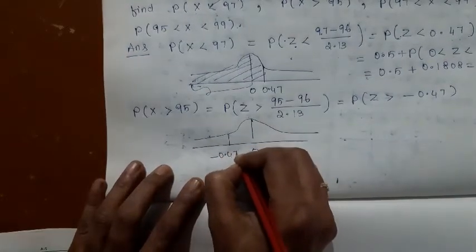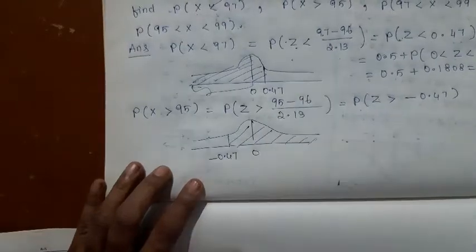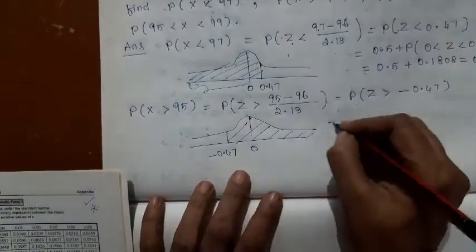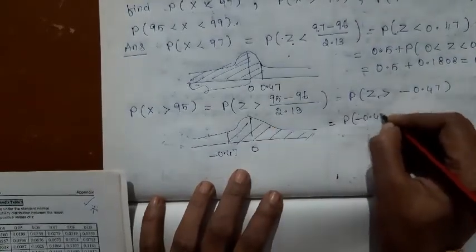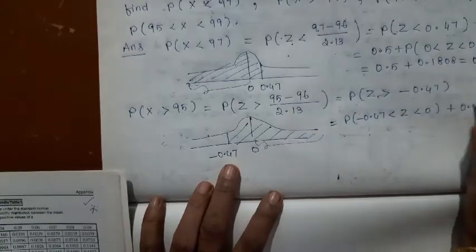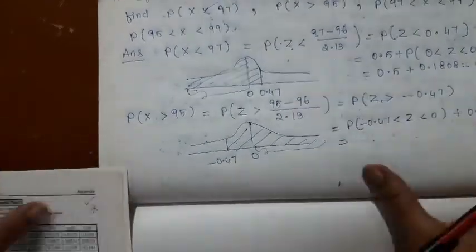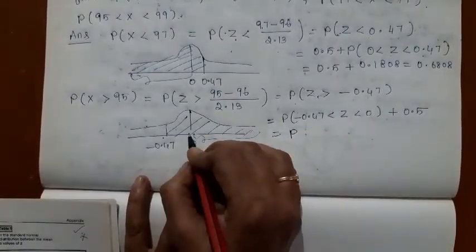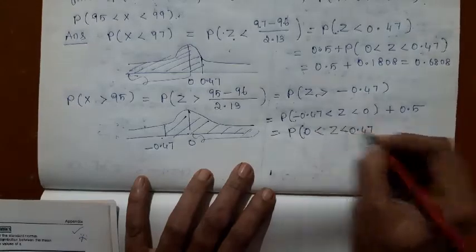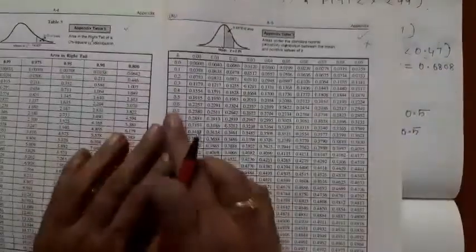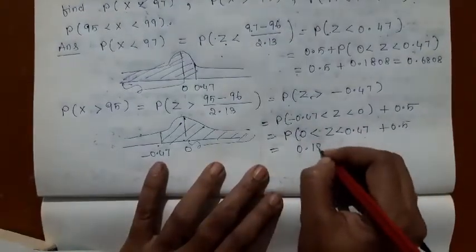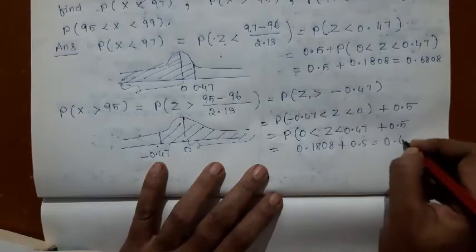Draw the curve. Minus 0.47 will be to the left of center. Greater than minus 0.47 means you need the area to the right of that point. Proceed based on the curve. You want the area from minus 0.47 to 0, plus the remaining area of 0.5. Negative values are not available in the table, but the area from minus 0.47 to 0 is the same as the area from 0 to 0.47. Looking up 0.47 in the table gives 0.1808. So 0.1808 plus 0.5 equals 0.6808.